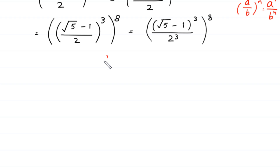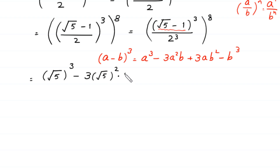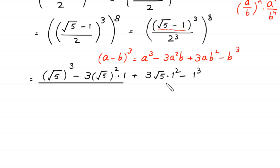Using the identity (a - b)³ = a³ - 3a²b + 3ab² - b³, we expand (square root of 5 minus 1)³. This gives: (√5)³ - 3·(√5)²·1 + 3·√5·1² - 1³, divided by 2³ = 8, whole to the power 8. Simplifying: (√5)³ = 5√5, (√5)² = 5 so 3·5 = 15, and the last term is 1. So numerator becomes 5√5 - 15 + 3√5 - 1, divided by 8, whole to the power 8.